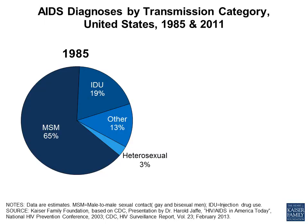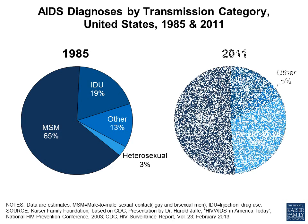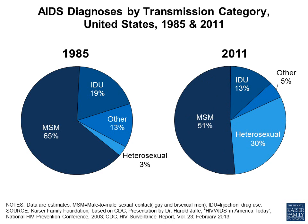This slide shows the evolution of transmission categories over time. In 1985, near the beginning of the epidemic in the United States, two-thirds of the cases of HIV were attributed to men having sex with men. A small percentage were heterosexually transmitted and injection drug use was the transmission mode for about twenty percent of the cases. In 2011, male-to-male sexual activity was still the majority means of transmission but only by a small percent. Heterosexual transmission had increased significantly and the IDU and other categories had decreased.